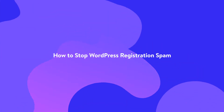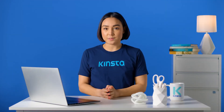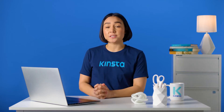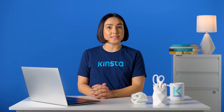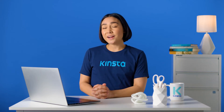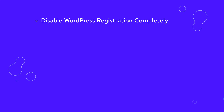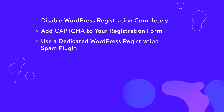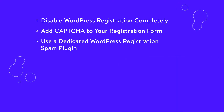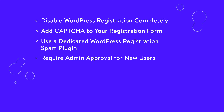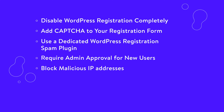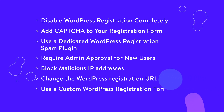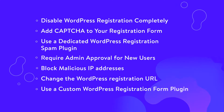There are a number of different strategies that you can use to stop WordPress registration spam. Depending on your site's needs and the severity of your problem, you might need to implement just one of these strategies, or you might need to try multiple tactics. These strategies are as follows: one, disable WordPress registration completely; two, add CAPTCHA to your registration form; three, use a dedicated WordPress registration spam plugin; four, require admin approval for new users; five, block malicious IP addresses; six, change the WordPress registration URL.